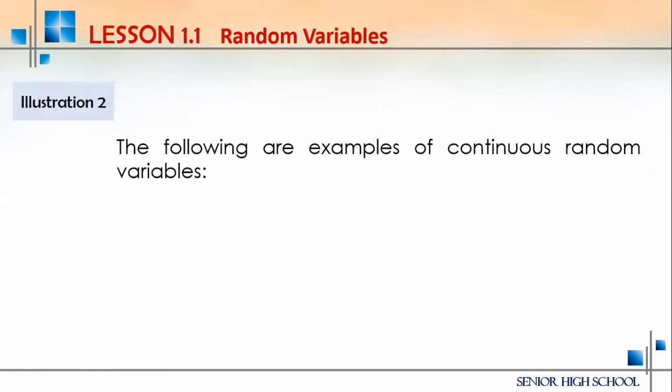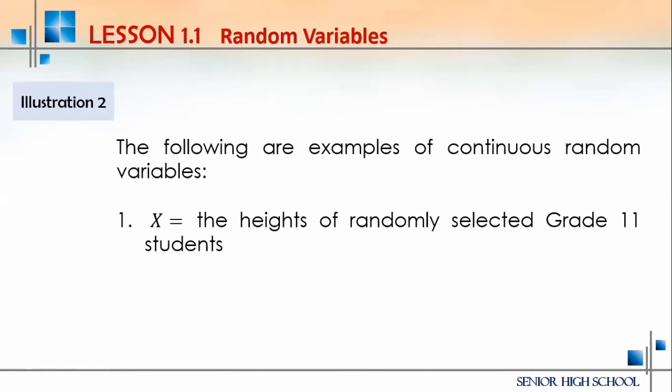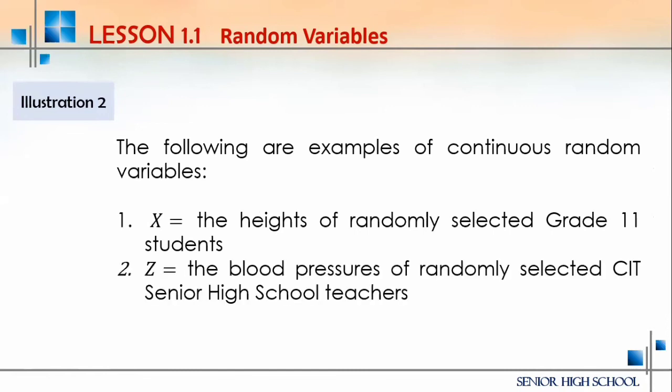Examples of continuous random variables: first, X is the height of a randomly selected Grade 11 student. Second, the blood pressures of randomly selected senior high school teachers — blood pressure is a best example for continuous random variables since it cannot be counted but can only be measured using blood pressure tools.